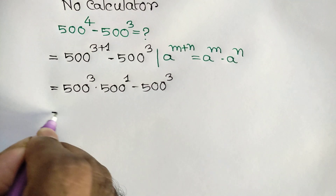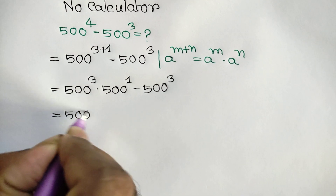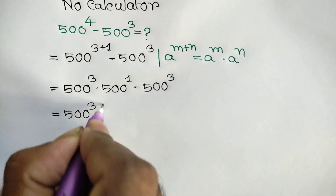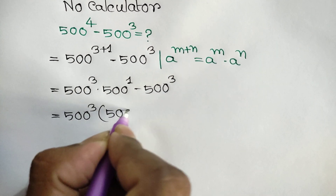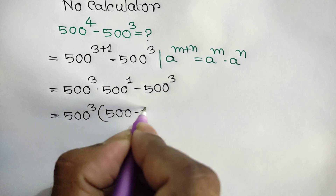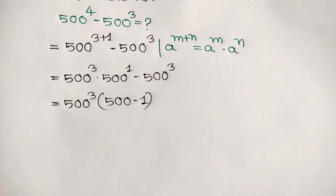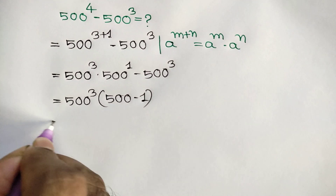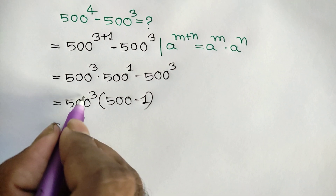Now taking out the common factor 500 to the power 3, we will get 500 to the power 3 times (500 minus 1), which equals 500 to the power 3 times 499.